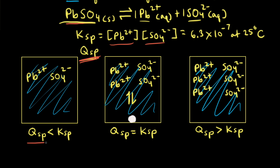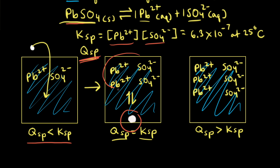If Qsp is less than Ksp, the solution is unsaturated, which means no precipitate would form. For an unsaturated solution, you can dissolve more lead two sulfate in it. If we were to put a small amount of lead two sulfate in our unsaturated solution, it would dissolve, and it would continue to dissolve until Qsp is equal to Ksp and the system is at equilibrium. At equilibrium, the solid is turning into the ions at the same rate the ions are turning back into the solid.